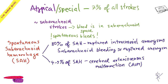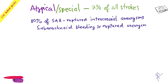Any of us can have an aneurysm. It typically ruptures around age 45–50. The cause is genetic and developmental: as an embryo, some parts of the cerebral vessel wall develop weaker than others — like a mason using a bad brick. These weak spots exist from birth.